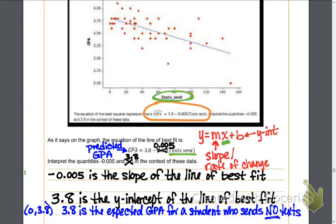The slope, remember slope is rise over run, or the change in our y-variable divided by the change in our x-variable. Our y-variable is GPA, and our x-variable is text messages sent. So since this is a negative slope,